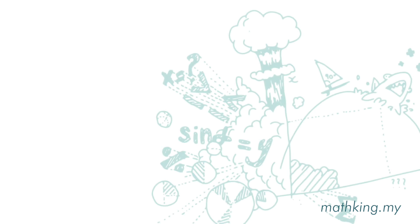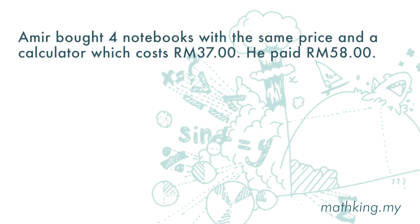Last one: Amir bought four notebooks with the same price and a calculator which costs 37 ringgit, and he paid 58 ringgit. He bought four notebooks — we do not know the price of the notebooks, so we are going to use x to represent the price of one notebook. Four notebooks cost 4x, or 4 times x.